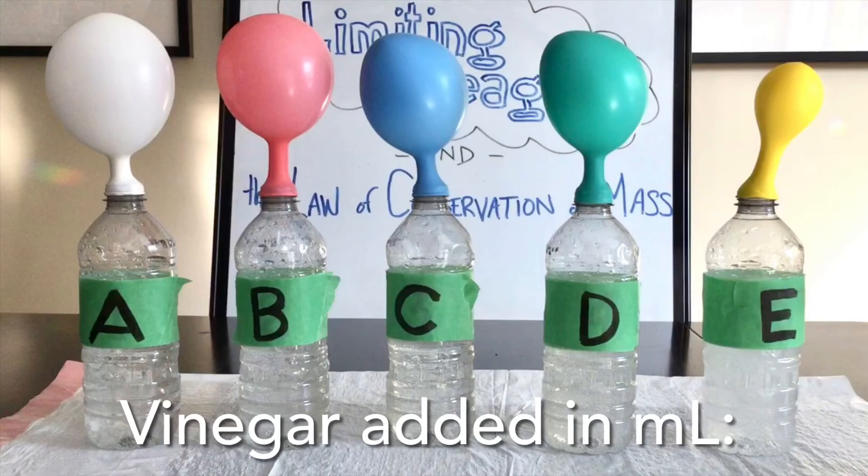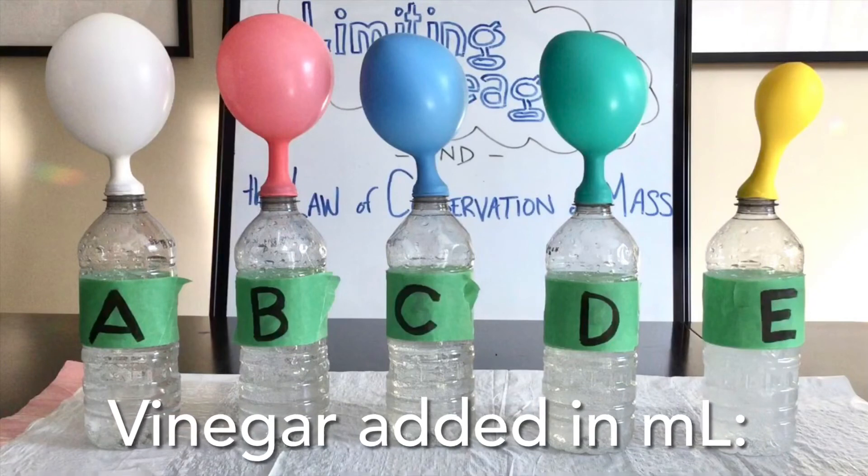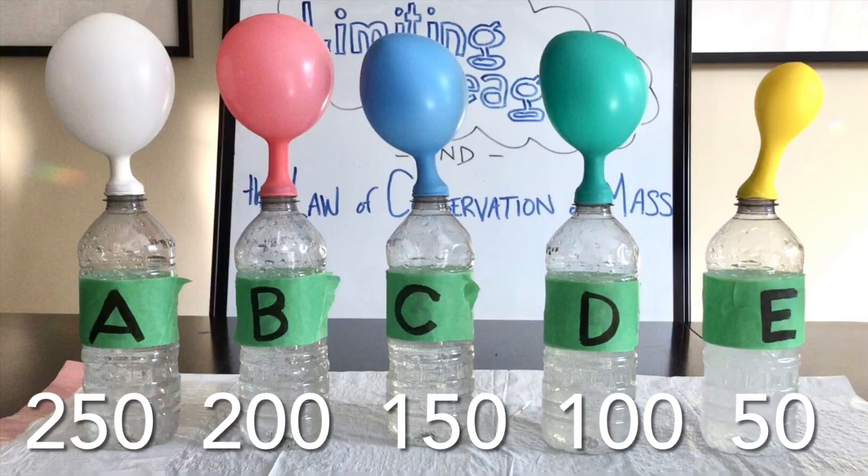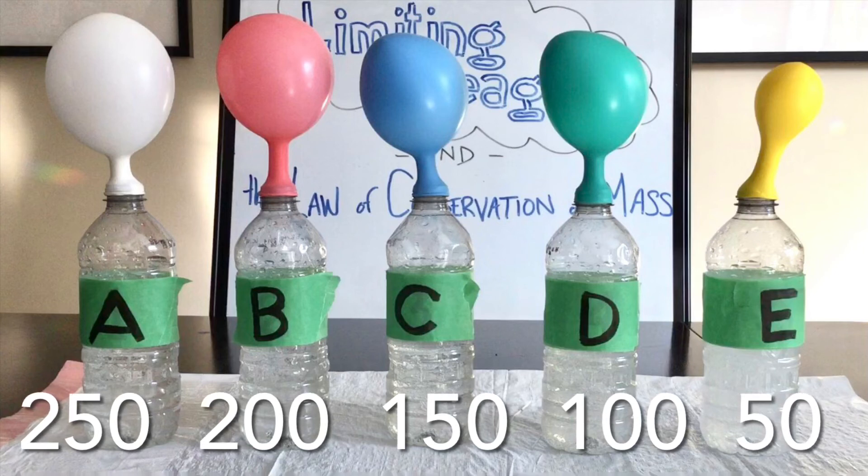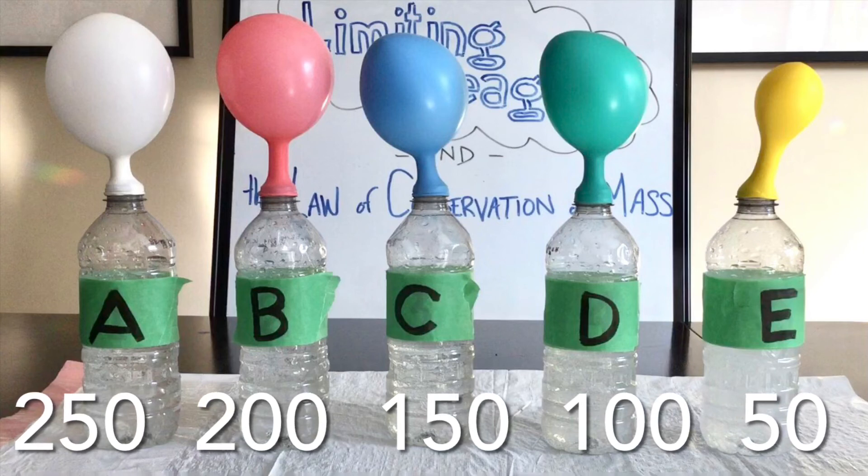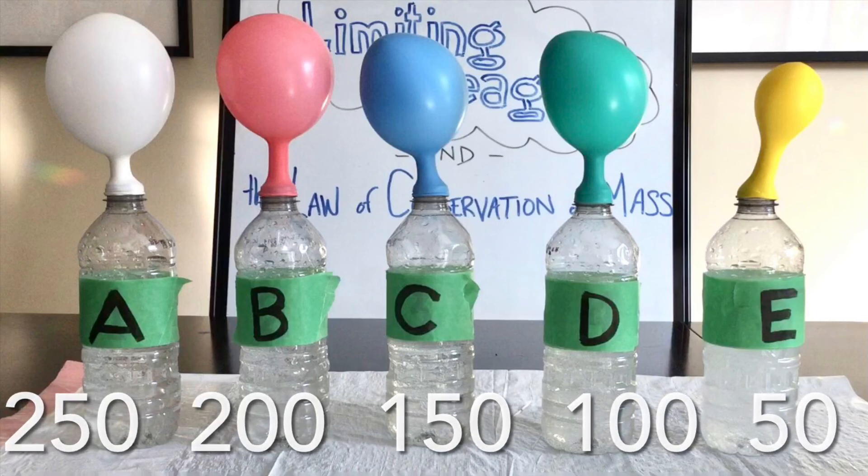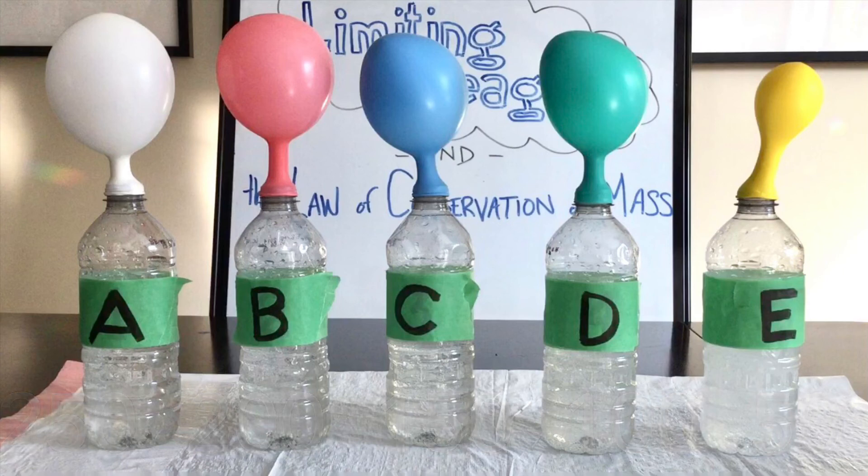Okay, here's a little recap as to how much vinegar was added to each bottle. Bottle A received 250, B 200, C 150, D 100, and E received only 50 ml of vinegar. Remember, each bottle received exactly the same amount of baking soda, which was about 4 grams. You should make a note in your observation table of the relative sizes of these balloons. Don't skimp on the details. The road to a level 4 mark is paved with the details. Good luck, and have fun sciencing!